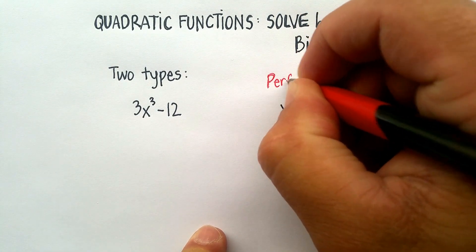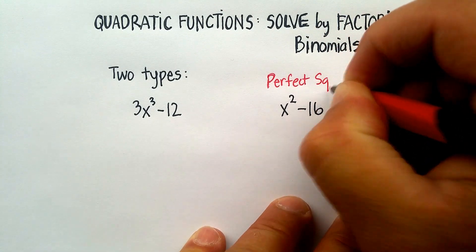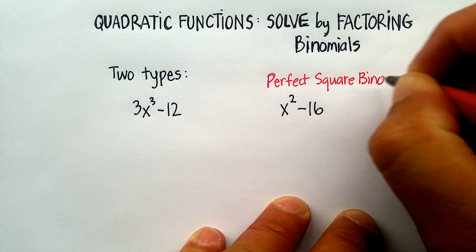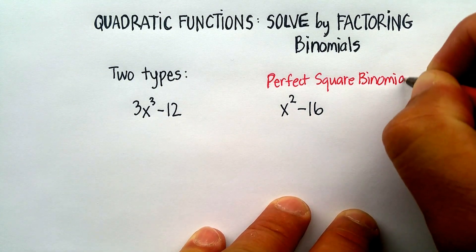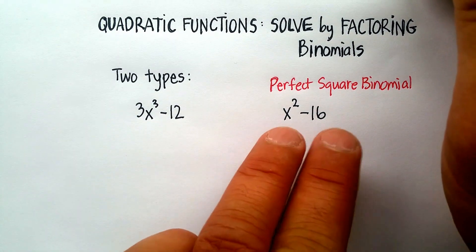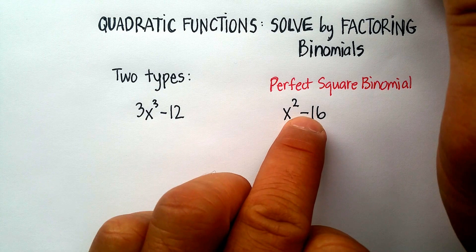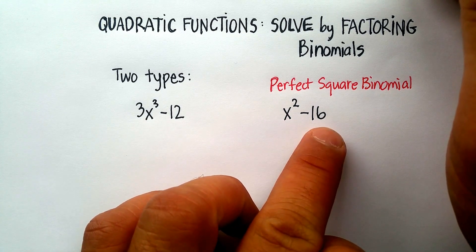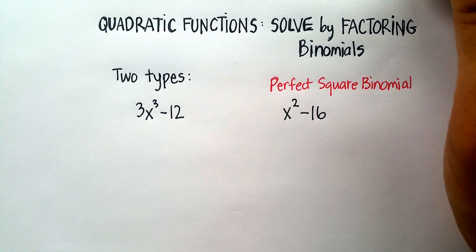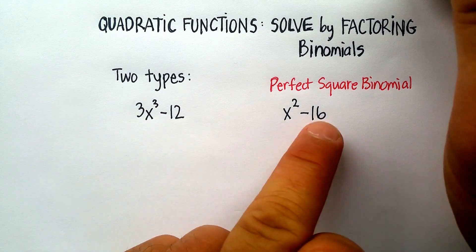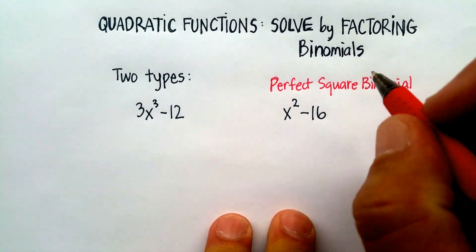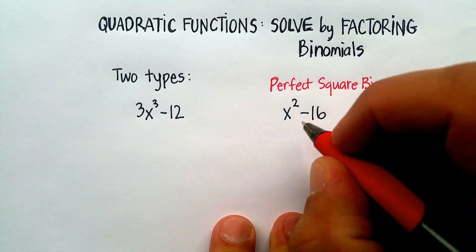Now why is it a perfect square binomial? Well, it's a perfect square binomial because first of all, we know that a binomial means two terms separated by an addition or subtraction. Each of the terms is a perfect square, so x² is just x times x and 16 is 4 times 4.